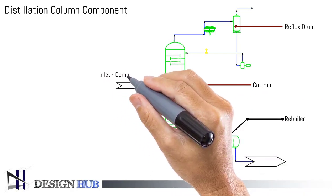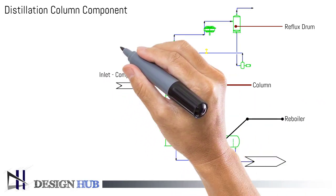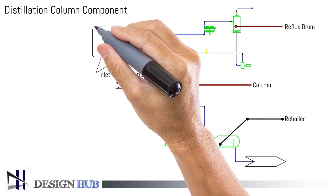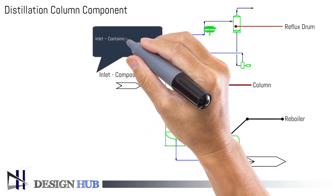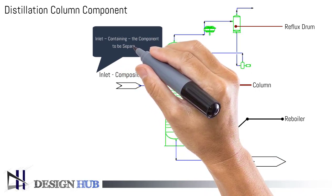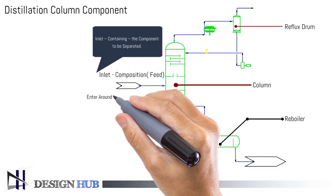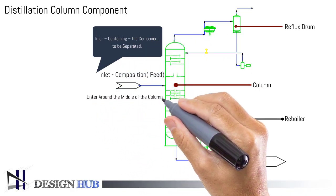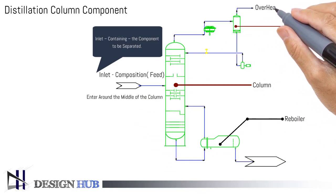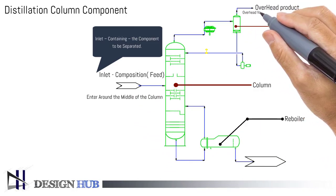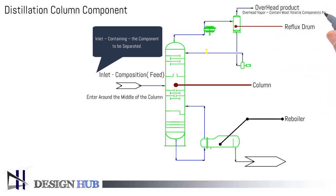This is the inlet feed to the column. The inlet feed contains components to be separated. The inlet nozzle is located around the middle of the column. This is the overhead component. The overhead component contains more volatile components.